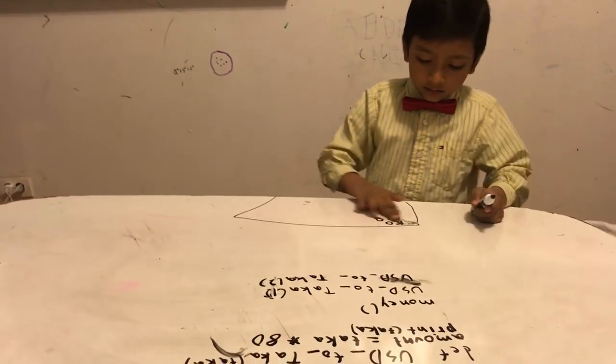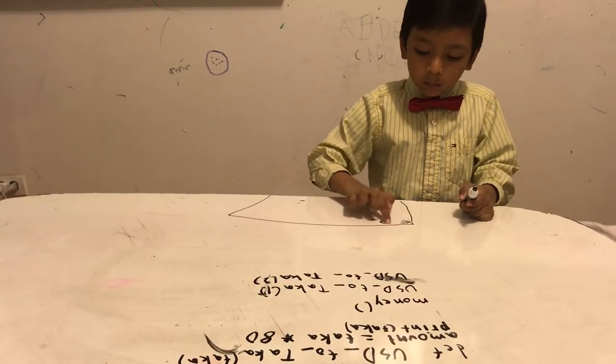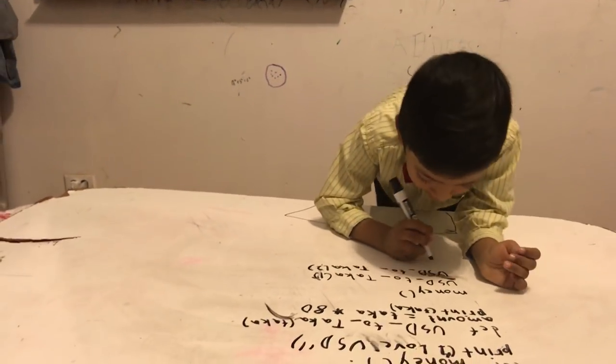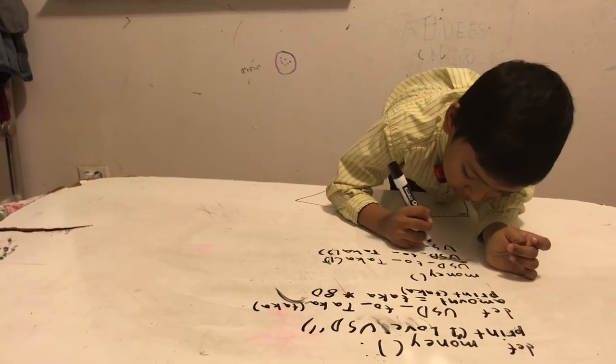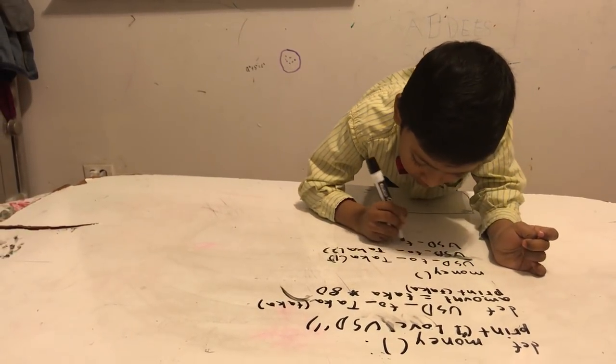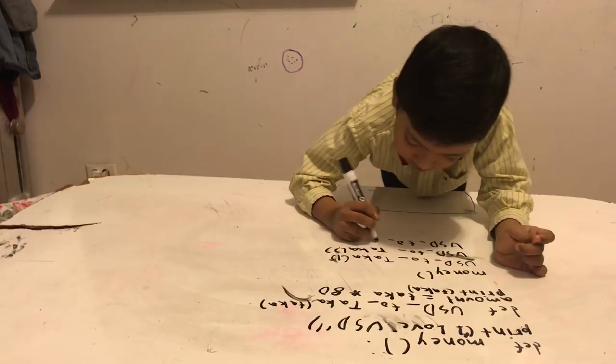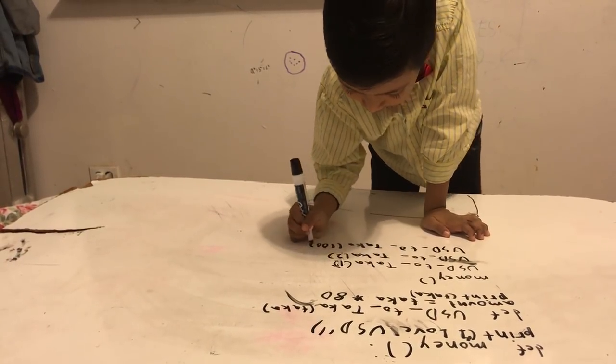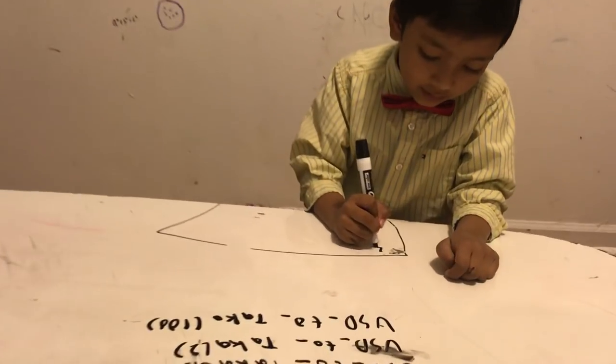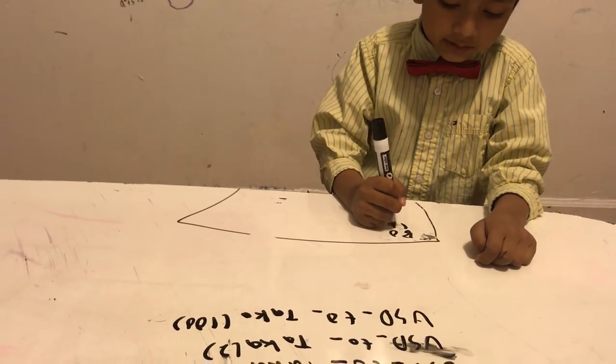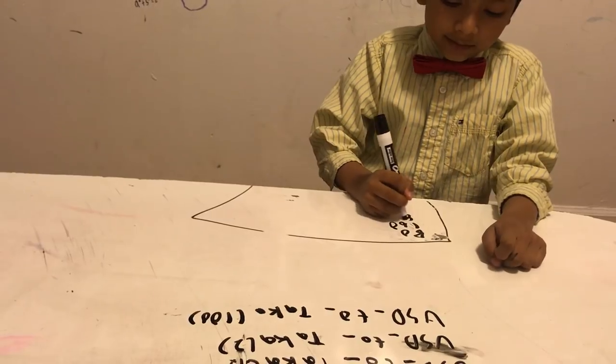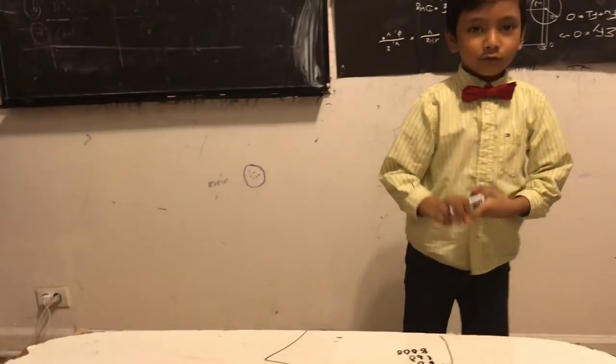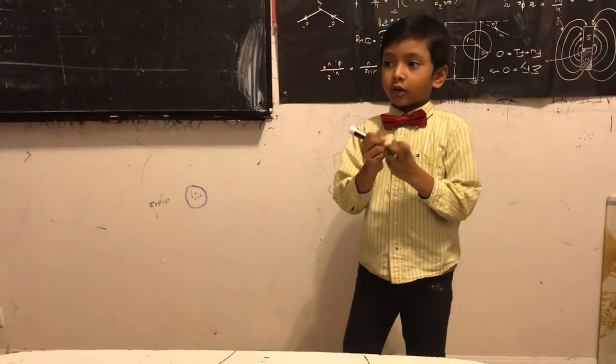And then if you wrote it one more time, it would be 100. That would be a pretty big number. You would see USD_to_Taka_100. If you did that, it would be 80, 8000, 160, 8000. Pretty spectacular, right? Now let's go to the computer, which will give us 80 takas.